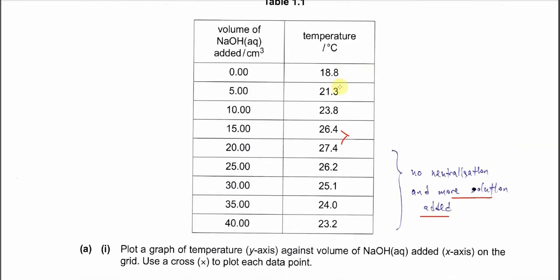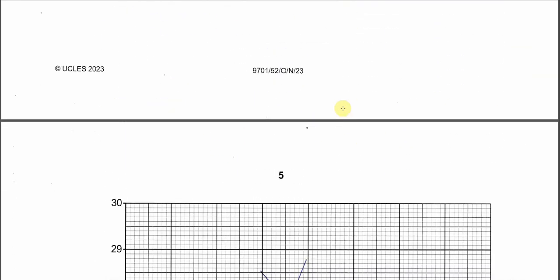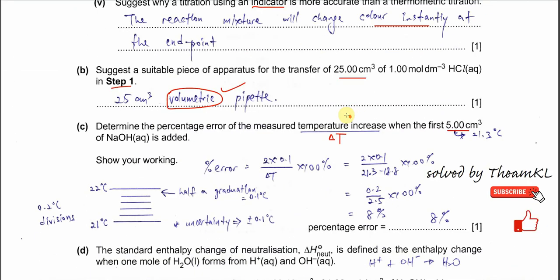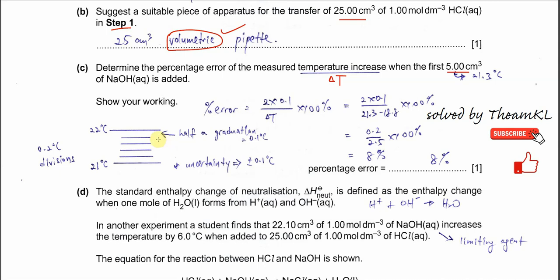From the table, the first addition shows temperature increasing from 18.8°C to 21.3°C. We use 21.3 minus 18.8 to get delta T = 2.5°C. The thermometer has 0.2 degree C divisions, so each graduation is 0.2°C and half a graduation is 0.1°C. Therefore the uncertainty is ±0.1°C.